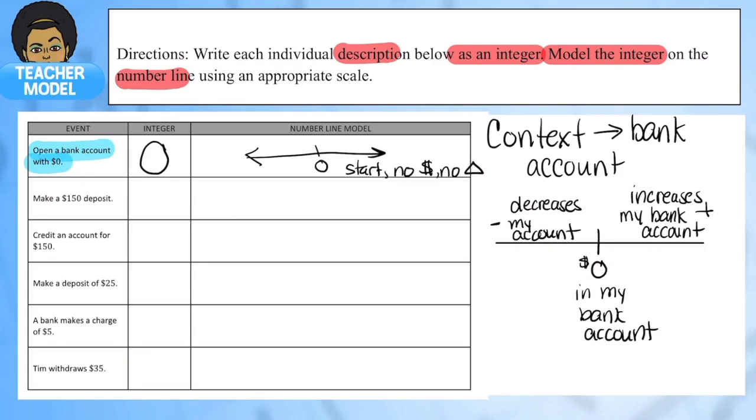In the second one, I want to make a $150 deposit. When I deposit money, that's money I'm putting into my account. That's what a deposit means, to put money into account. If I'm putting money into my account, it's having a positive effect on my bank account, so I'm going to represent this as a positive 150. Here's my number line. I was at zero but I added money in there, so that represents 150 as located to the right. That's positive.